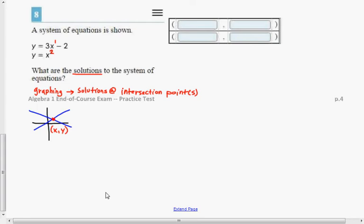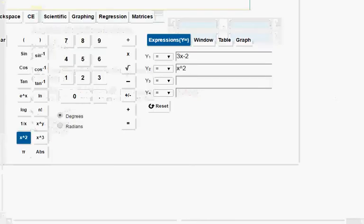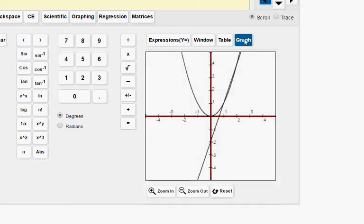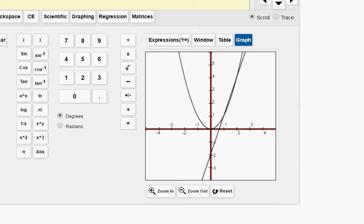Let me double check. Yep, 3x minus 2 and x squared. So, if you put those two equations both in at the same time, and you go to the graph feature, sure enough, here it is. Now, this is kind of hard to see.